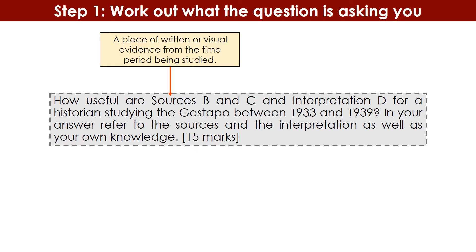To recap: a source is a piece of written or visual evidence from the time period being studied. As discussed in the previous video, that could be a portrait, a report, a letter, a diary extract, or a transcribed speech — any piece of evidence from that time. In this question you're going to have two of those sources, compared to just the one in the 7-marker.